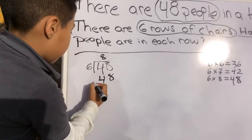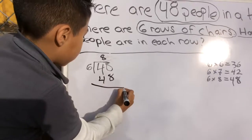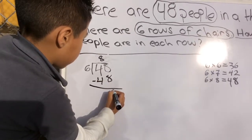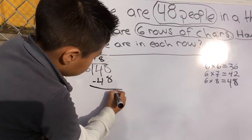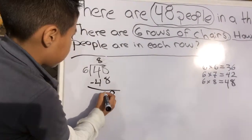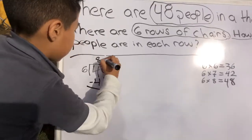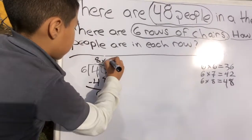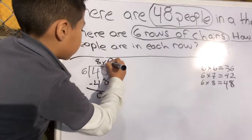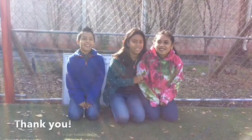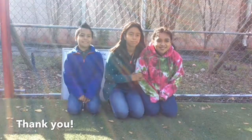So 48 minus 48 gives us 0. Our answer is 8 with a remainder of 0. That's how you solve a word problem.